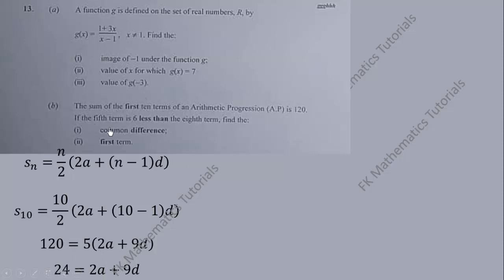We will also use a second equation. If the 5th term is 6 less than the 8th term, let's keep the first equation and derive another equation from this statement. If you add 6 to the 5th term, you get the 8th term.